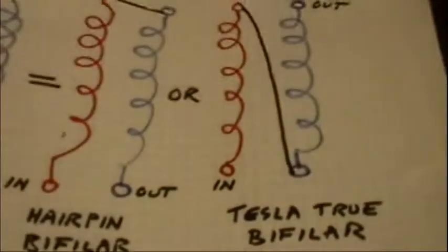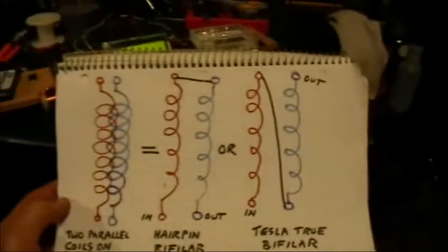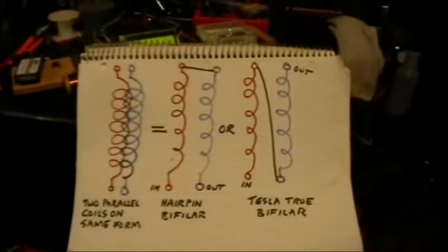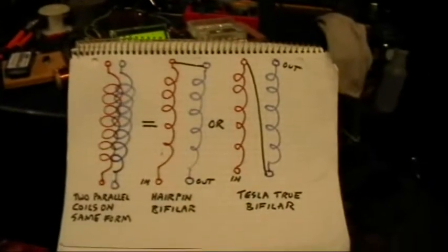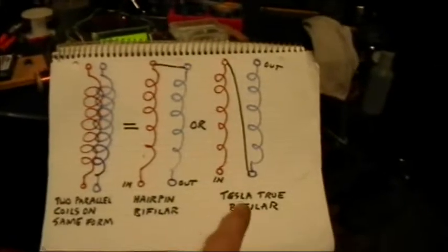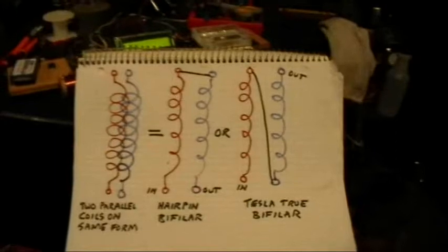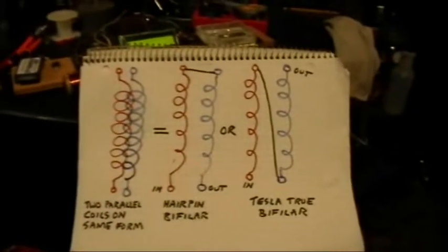Now what I'm trying to explain in this video is what exactly is a true Tesla bifiler wound coil, and what effect does a bifiler winding have on the coil's inductance. People have a lot of misconceptions about this. Some people think that a Tesla bifiler, a true Tesla bifiler winding cancels out inductance, or that it has no inductance or less inductance than a normally wound coil would, and that's just not the case.